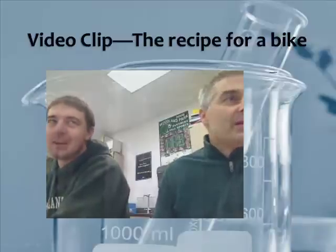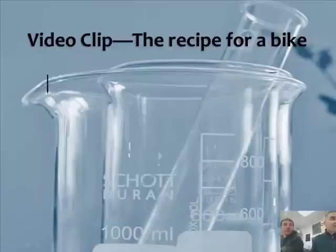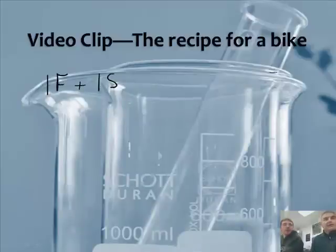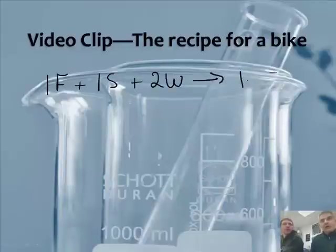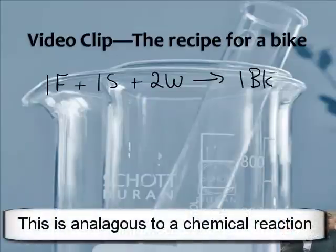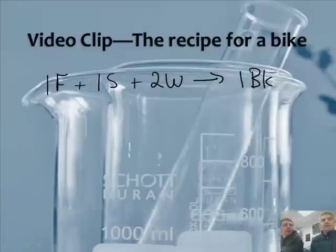What's the recipe? One frame — we'll call it F, kind of like a chemical symbol. Plus one seat — one S. And then two wheels — plus two W. Makes one bike — one BK. So there are our ratios. You can actually write these as ratios.